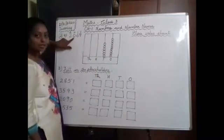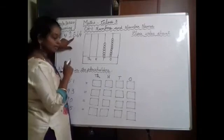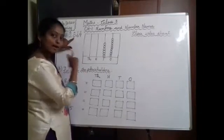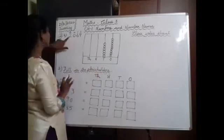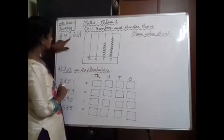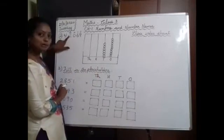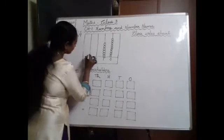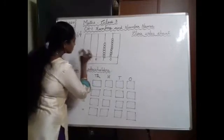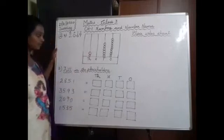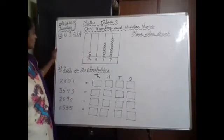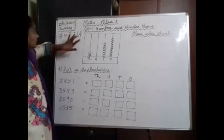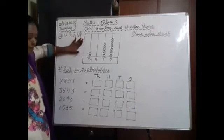In the 100s place, 0 is there, so we are not going to draw any balls. In the 1000s place, 2 is there. So we are going to draw 2 balls — 1, 2. We have represented 2,069 in the Abacus.